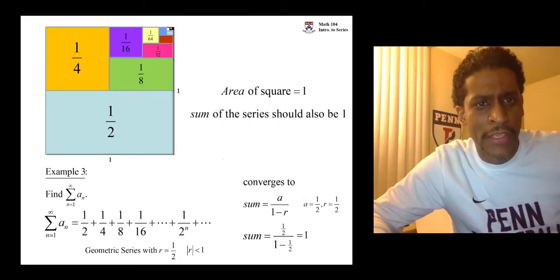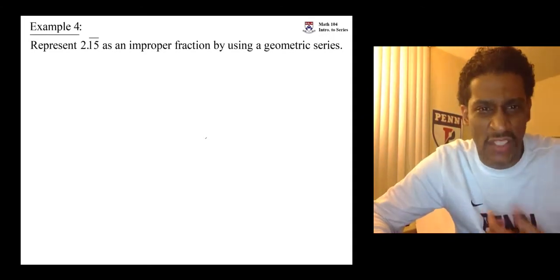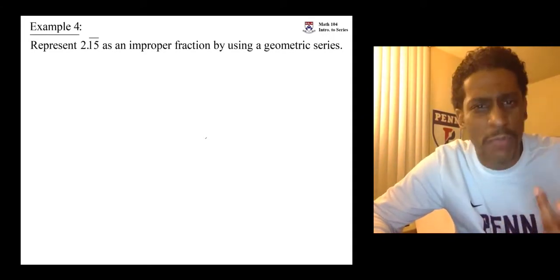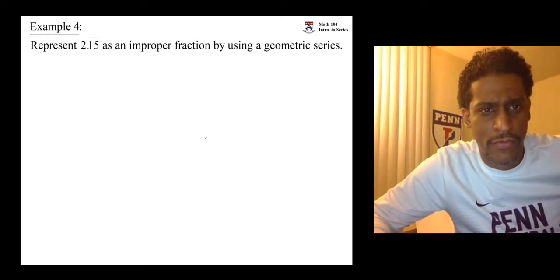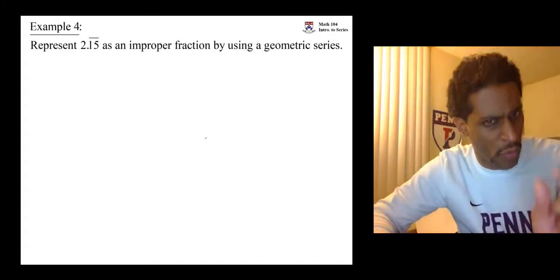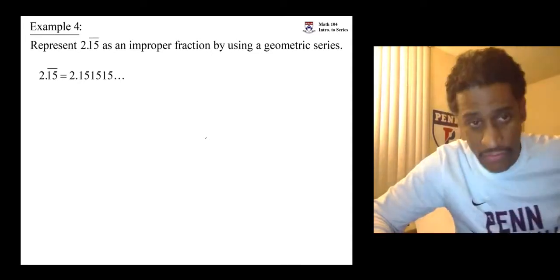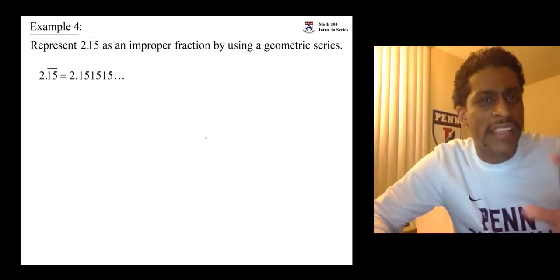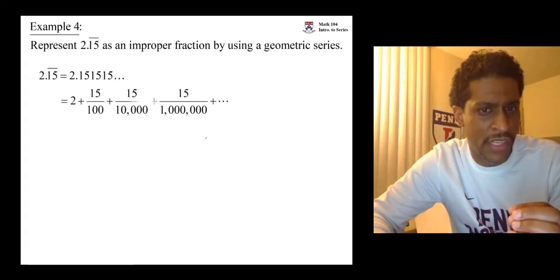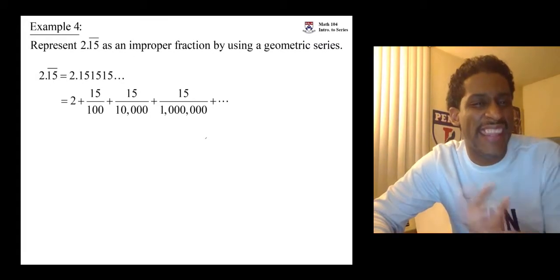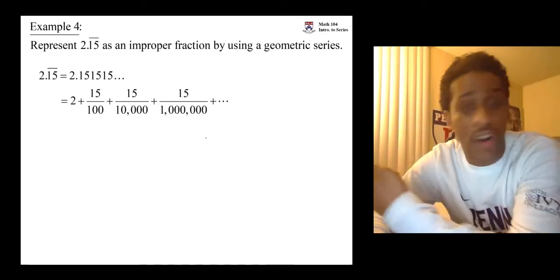Let's see another example. In this question we're asked to represent a repeating decimal as an improper fraction using a geometric series. The number is 2.151515... repeating, where the 15 is repeating. If we break it down, it is two plus fifteen hundredths plus fifteen ten-thousandths. The next fifteen is one millionth, and so on forever.